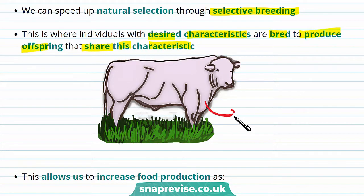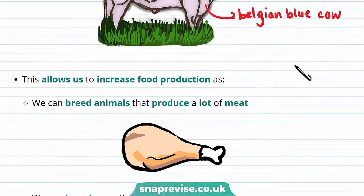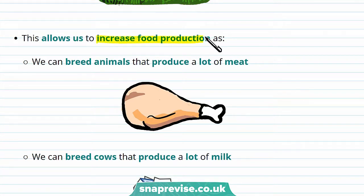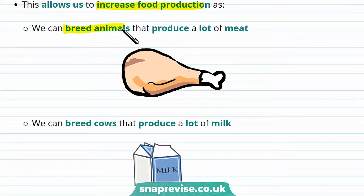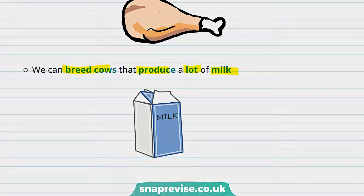This is an example of a Belgian Blue. This cow has been selectively bred to increase the amount of meat it produces. Selective breeding allows us to increase food production — we can breed animals like the Belgian Blue that produce a lot of meat, or we can breed cows that produce a lot of milk. This means selective breeding creates more money for farmers.